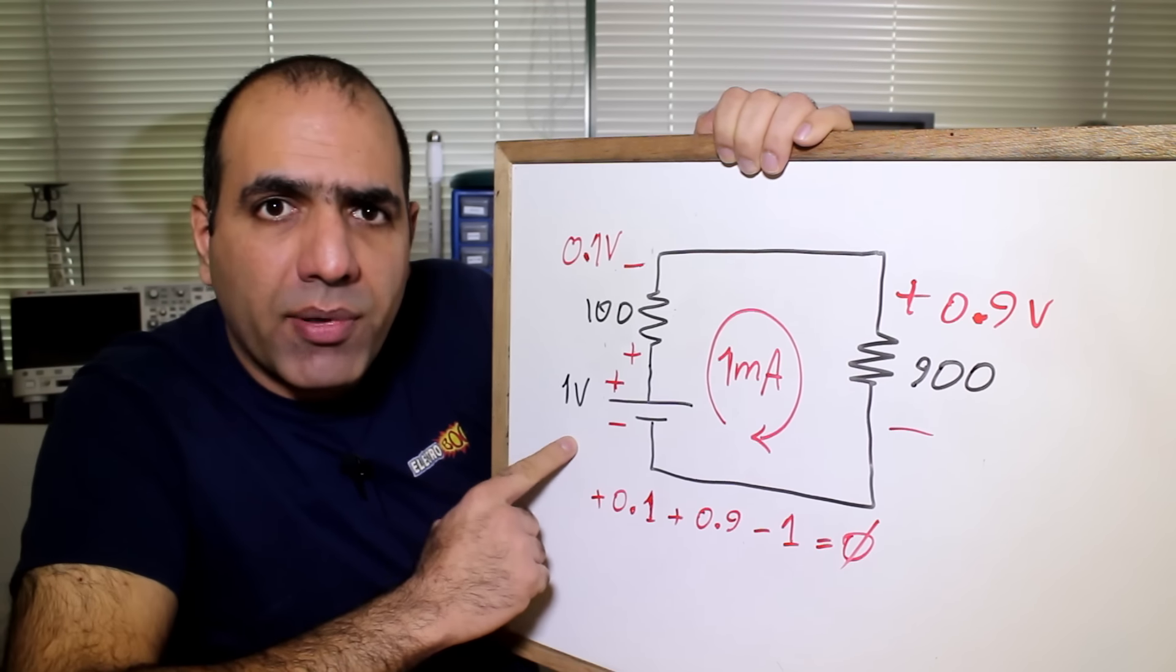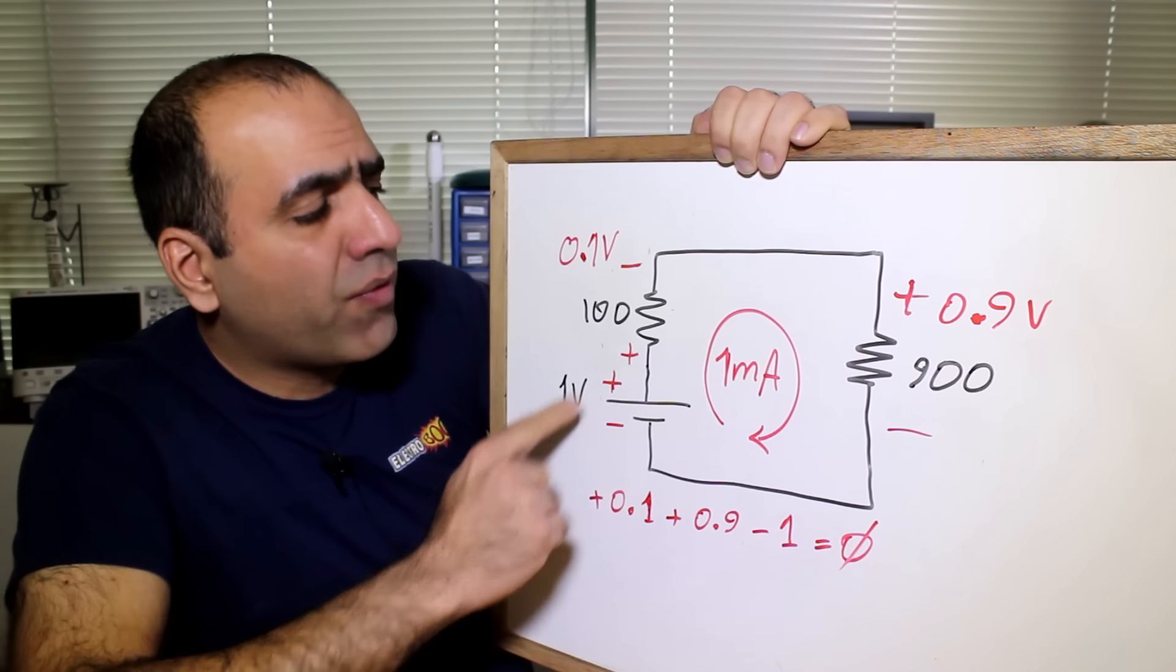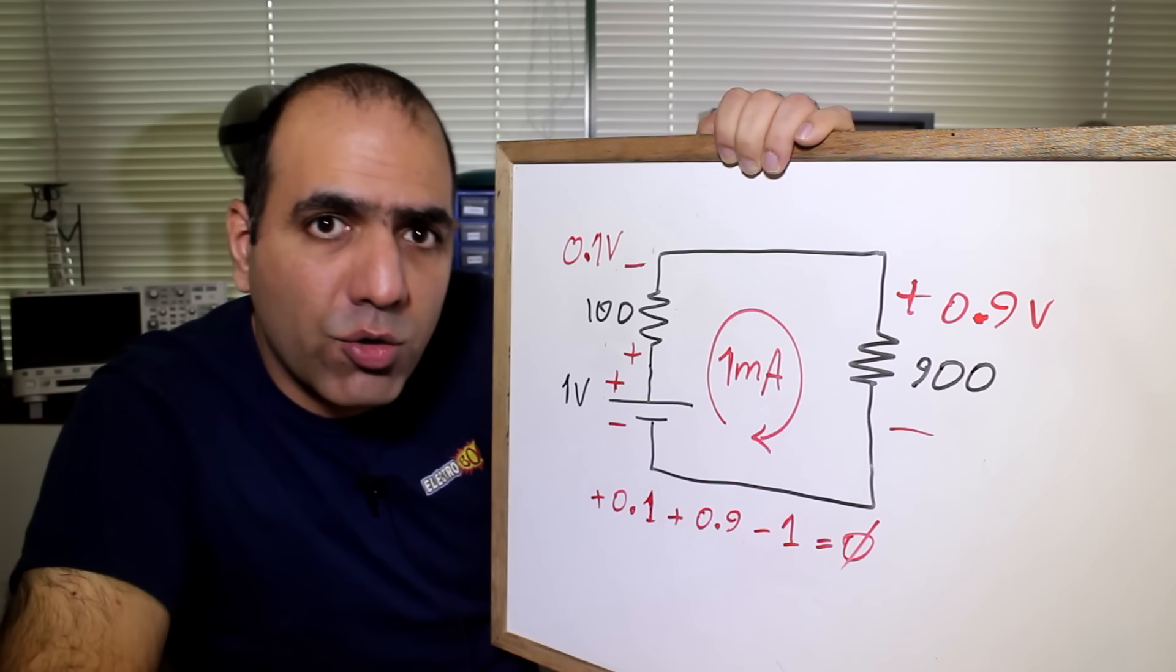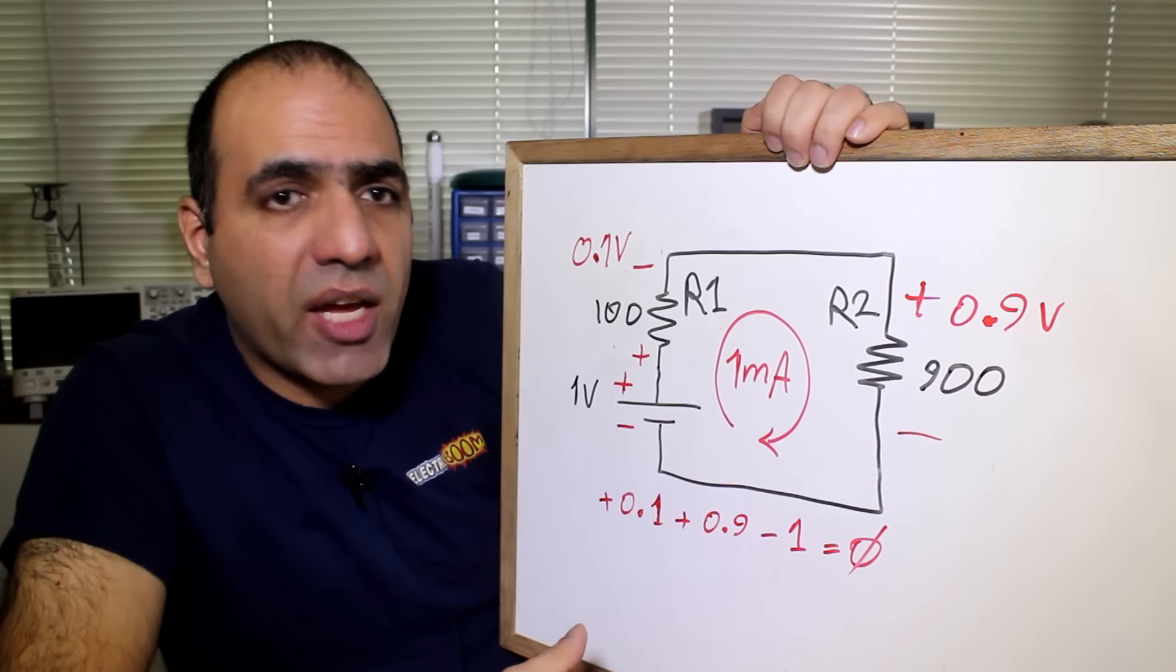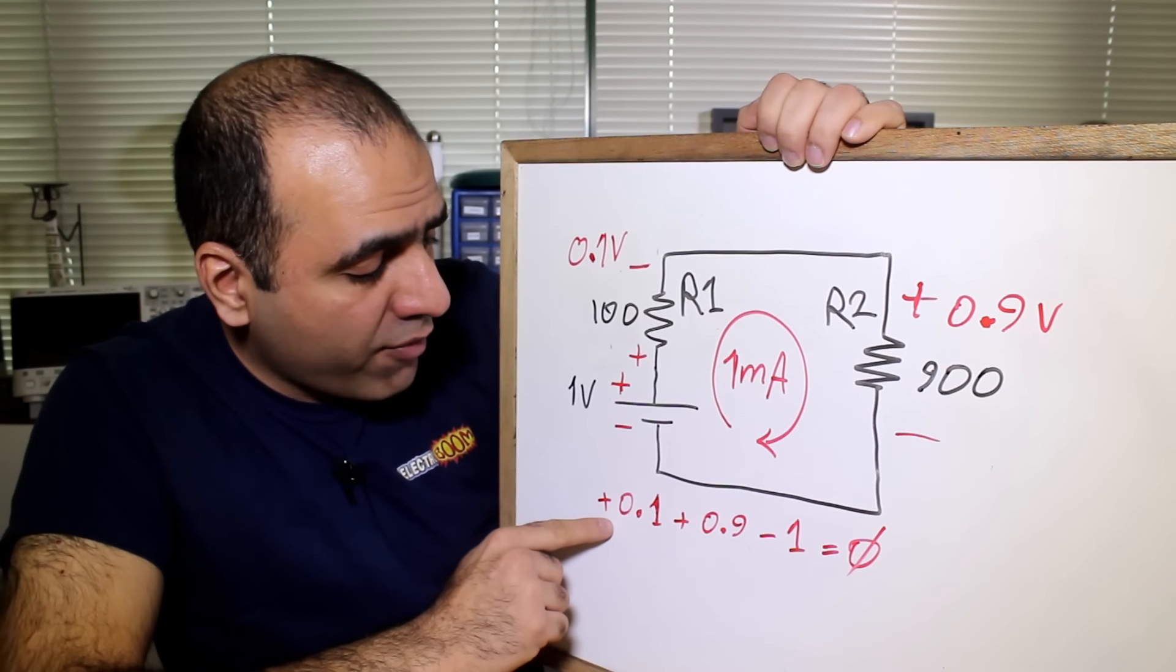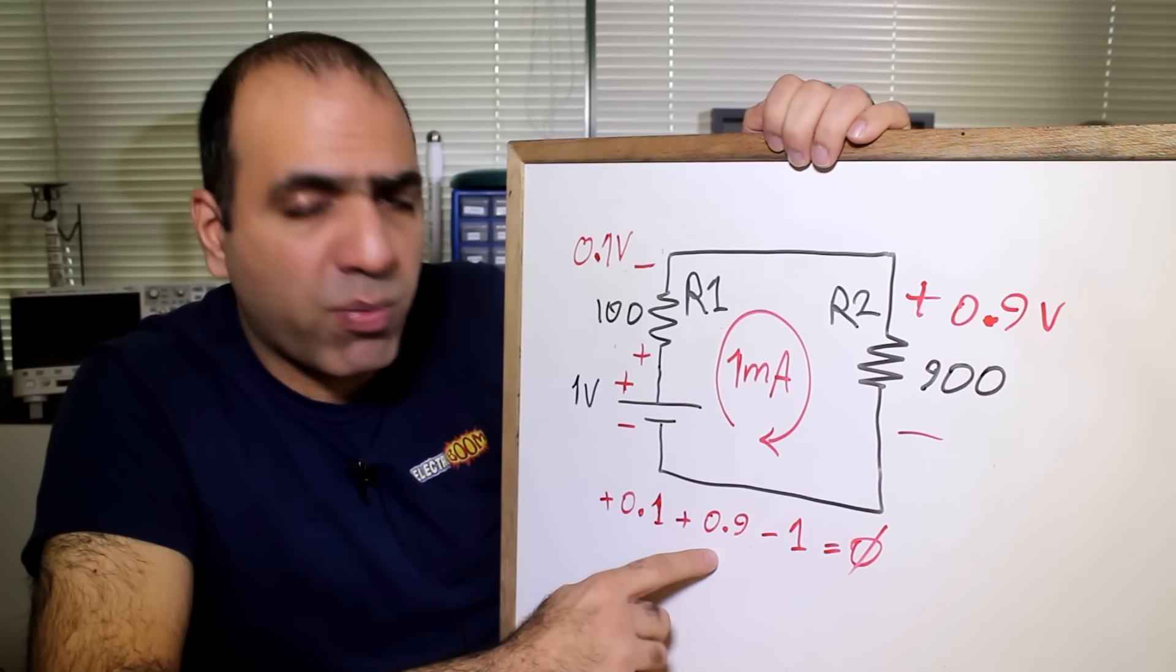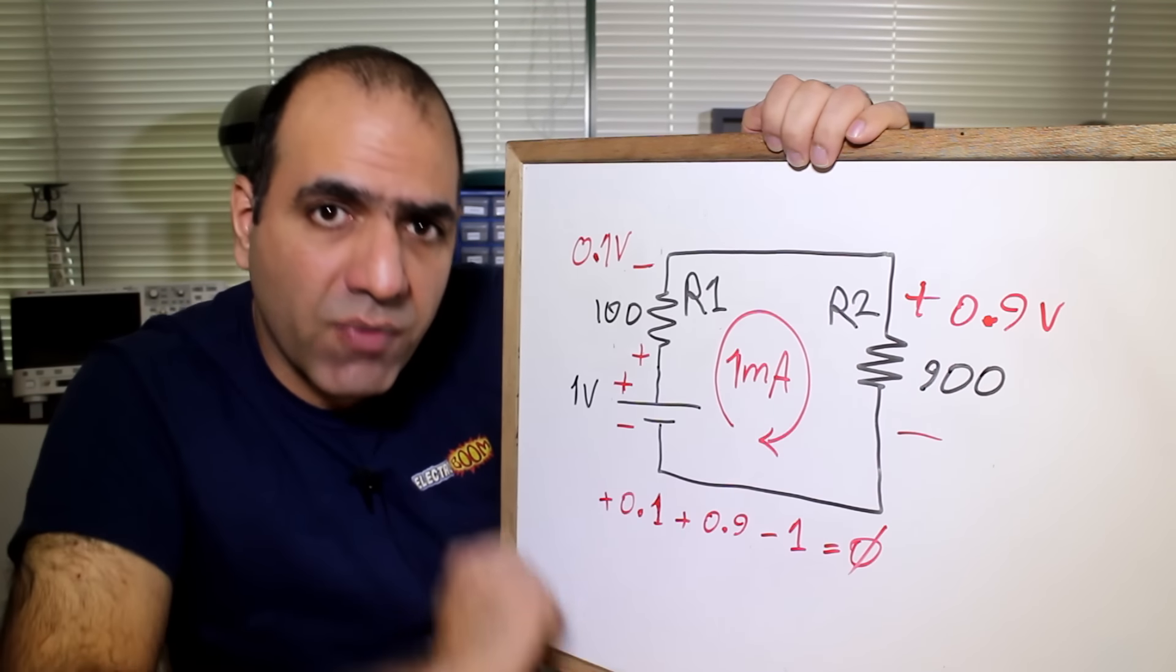But let me quickly summarize his reasoning. Imagine we have a circuit like this: a one volt supply in series with a hundred ohm and nine hundred ohm. So one volt divided by one kilo ohm total means there is one milliamp running through the loop, or 0.1 volt here and 0.9 volt there. If we calculate KVL in the loop in this direction, entering positive of R1 we have plus 0.1 volt, and entering positive of R2 we have plus 0.9 volts, and entering negative of the supply we have minus 1 volt, and the sum of all these is zero. Kirchhoff law holds fine here.